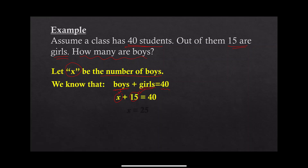Now, what is the number? Let's start guessing — what number, when added to 15, gives 40? We know the answer should be 25. In the next videos we will see the steps to solve equations, but for now we are using guessing: 25 plus 15 gives us 40.